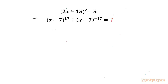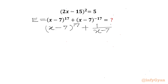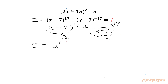Let's get started by considering the required expression equal to E. Using exponent law, we can write the required expression as (x - 7)^17 + 1/(x - 7)^17. Now I will call (x - 7) as A and 1/(x - 7) as B. So our required expression is A^17 + B^17.